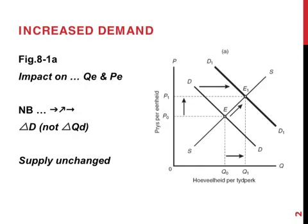In chapter 8 we build on what we've already learned about supply and demand in chapter 7. It's all about the interaction of the demand and supply curves and the result that these interactions have on the equilibrium price and equilibrium quantity.